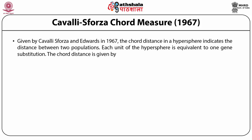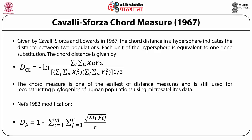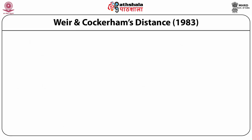Cavalli-Sforza chord measure: In 1967, Cavalli-Sforza and Edwards gave the chord distance. In a hypersphere, the chord distance indicates the distance between two populations, with each unit equivalent to one gene substitution. The chord measure is one of the earliest distance measures and is still used for reconstructing phylogenies of human populations using microsatellite data. However, estimated chord distance does not consider the role of mutation and assumes that changes are due to drift only, so it is also called the geometric distance. Nei gave a small modification of the chord measure, denoted dA, with the formula shown in the slide.